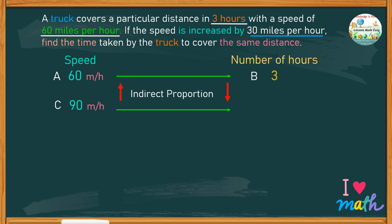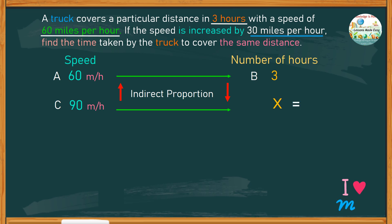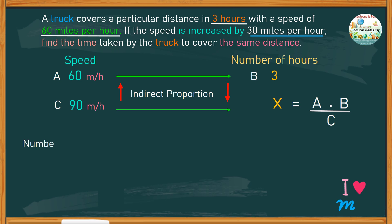And of course, with the unknown value as x. In an indirectly proportional relationship, the value of x can be determined by multiplying the value of a and b and then dividing by the value of c. Just use this formula where x would be the number of hours, then substitute the value for a, which is 60, multiplied by the value of b, which is 3.